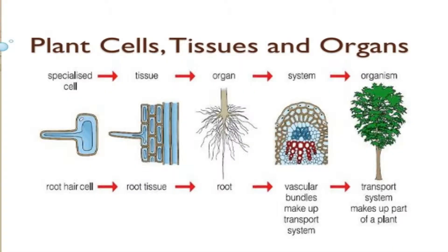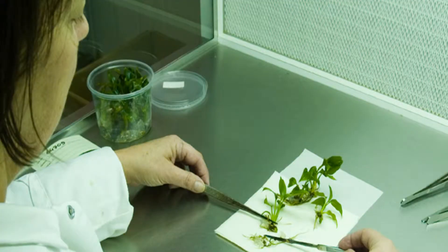Hello everyone, welcome to my channel. I'm Shamin. Today I'm going to talk about tissue culture. When one or more than one type of group of cells is called tissue. The process of separating a tissue from a plant and allowing it to grow in a nutrient medium is called tissue culture.